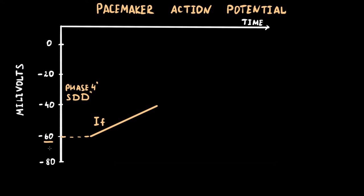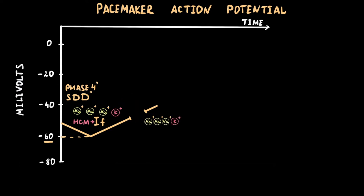IF channels are activated by hyperpolarization — that means when the membrane potential becomes more negative — whereas activation by depolarization is the common feature of many cardiac membrane channels. This is why this channel is called funny. The IF channel is coded by a specific gene: the hyperpolarization-activated cyclic nucleotide-gated gene, or HCN gene. When repolarization of the previous action potential reaches minus 60 mV, the funny channel opens. IF channels are responsible for a slow, mixed sodium-potassium inward current, but mostly sodium.